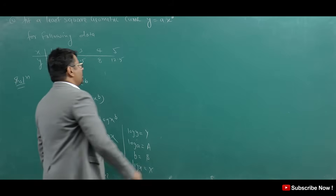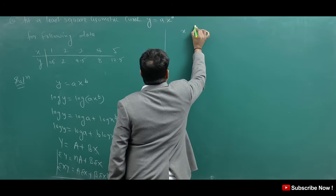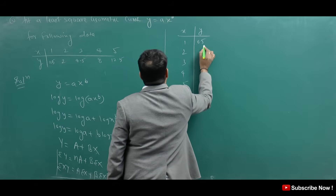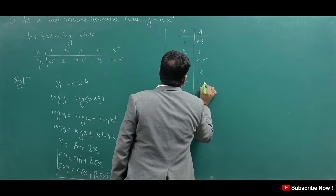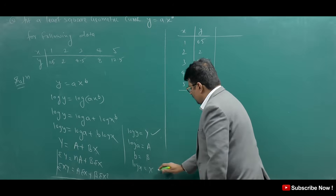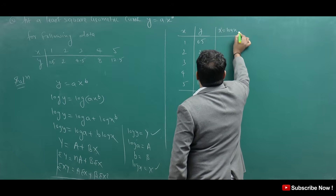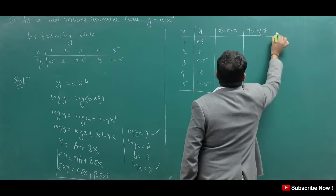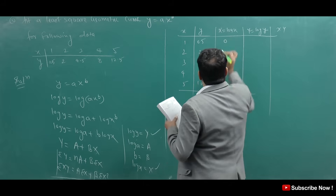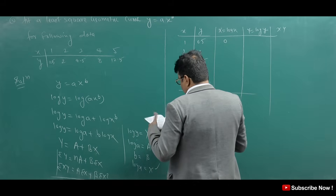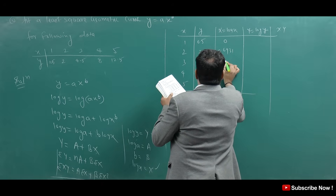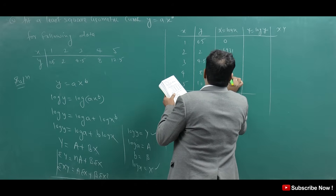For this question, X values given are 1, 2, 3, 4, 5 and corresponding Y values are 0.5, 2, 4.5, 8, 12.5. Capital X equals log X and capital Y equals log Y. So we compute log of each X and log of each Y. Log 5 gives 1.6094, log 0.5 gives capital Y value. Then log 8 and log 12.5 give 2.040794 and 2.5257 respectively.